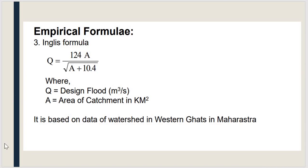The next formula is Inglis formula. Inglis developed a formula for design flood: Q = 124A / √(A + 10.4). If you know the area of the catchment alone, you can calculate the design flood. This formula is basically designed for watersheds in the Western Ghats in Maharashtra.